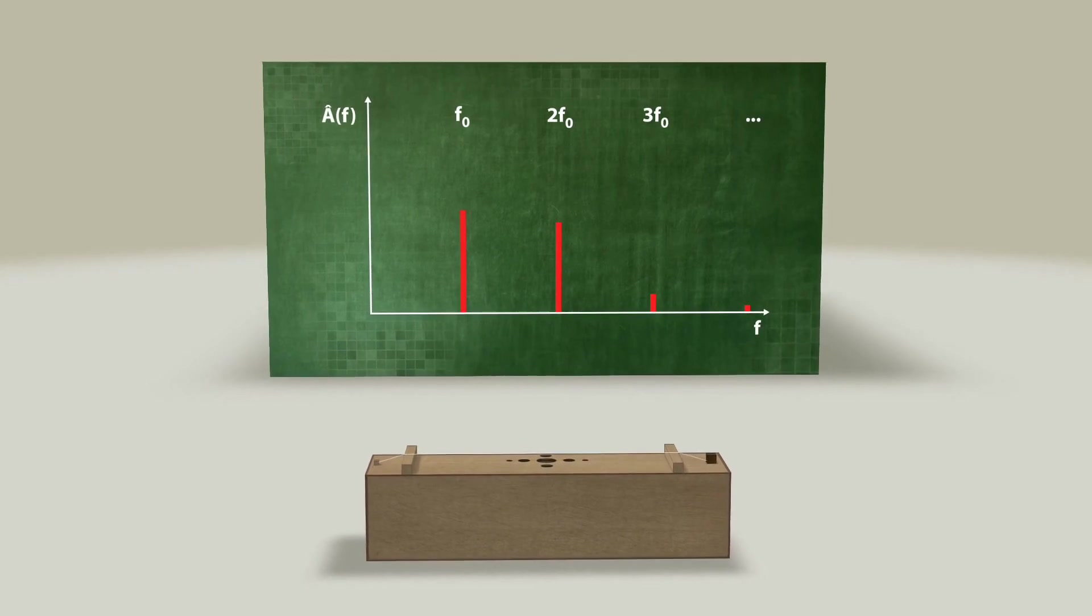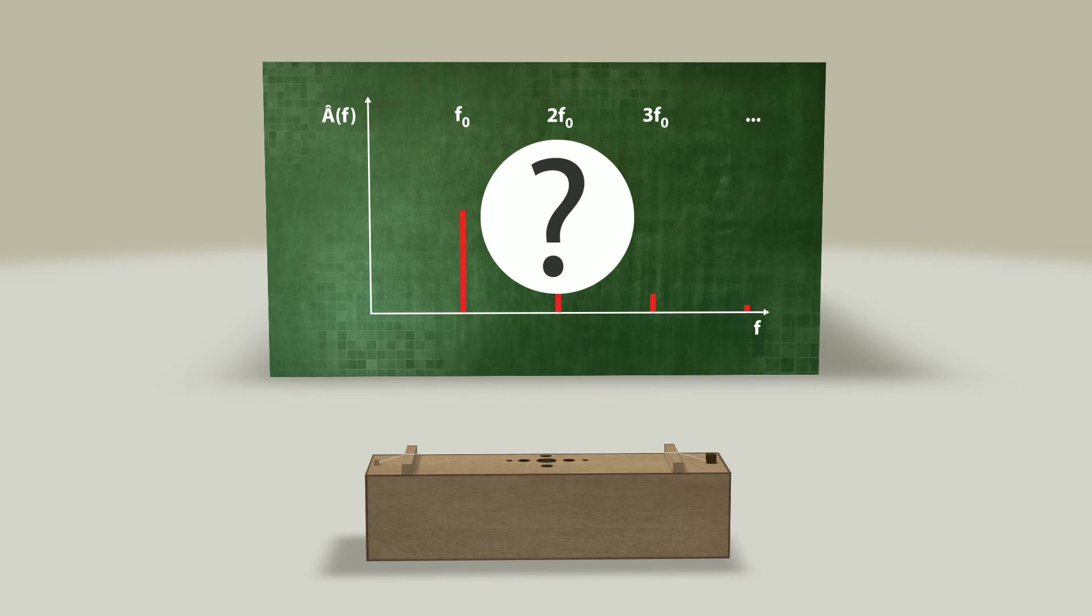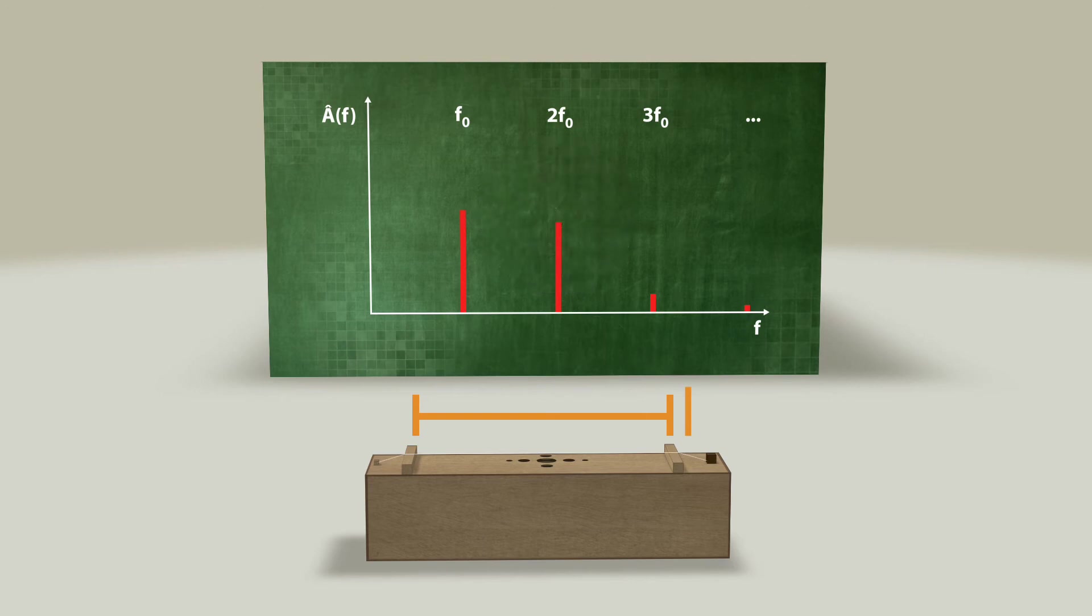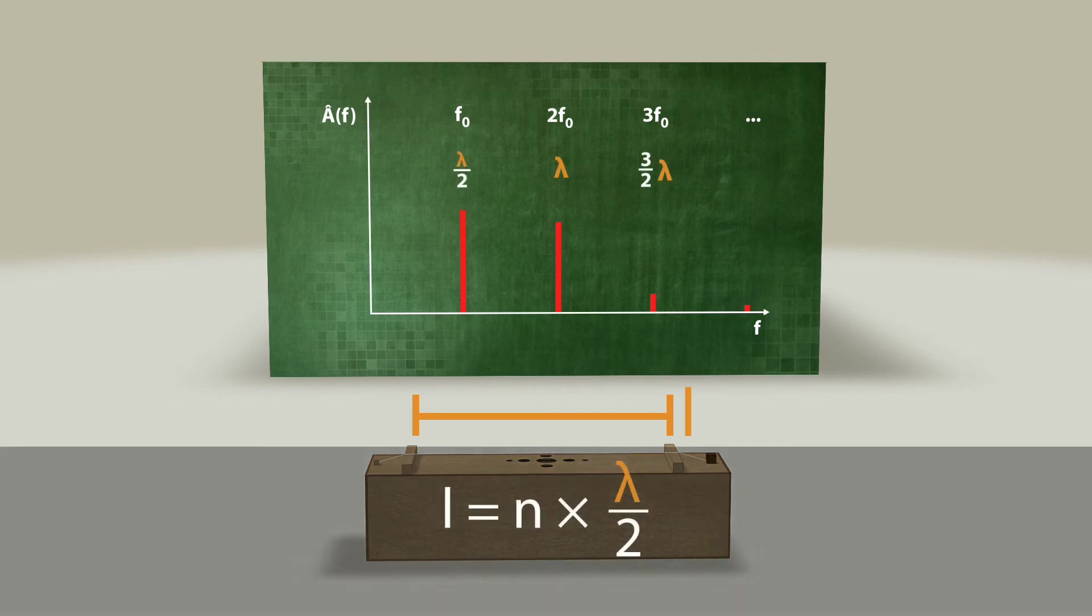Let us now return to the question of unambiguity. Is this spectrum a unique fingerprint for the vibrating string with the length L? Well it might seem to be the case at first, since there is an apparent correlation between the frequency and the string length L, such that L equals N times lambda over 2.